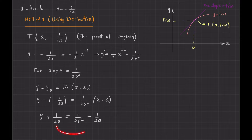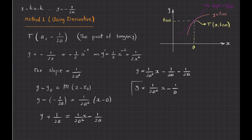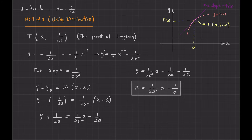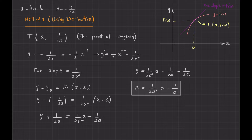Moving the constant to the other side, I get y equals 1 over 2a squared times x, then minus 1 over 2a minus 1 over 2a, which simplifies to minus 2 over 2a, or minus 1 over a. So the equation of the tangent line from my calculation is y equals (1 over 2a squared)x minus (1 over a). Comparing this with the given equation y equals kx minus k, these two expressions must be identical.